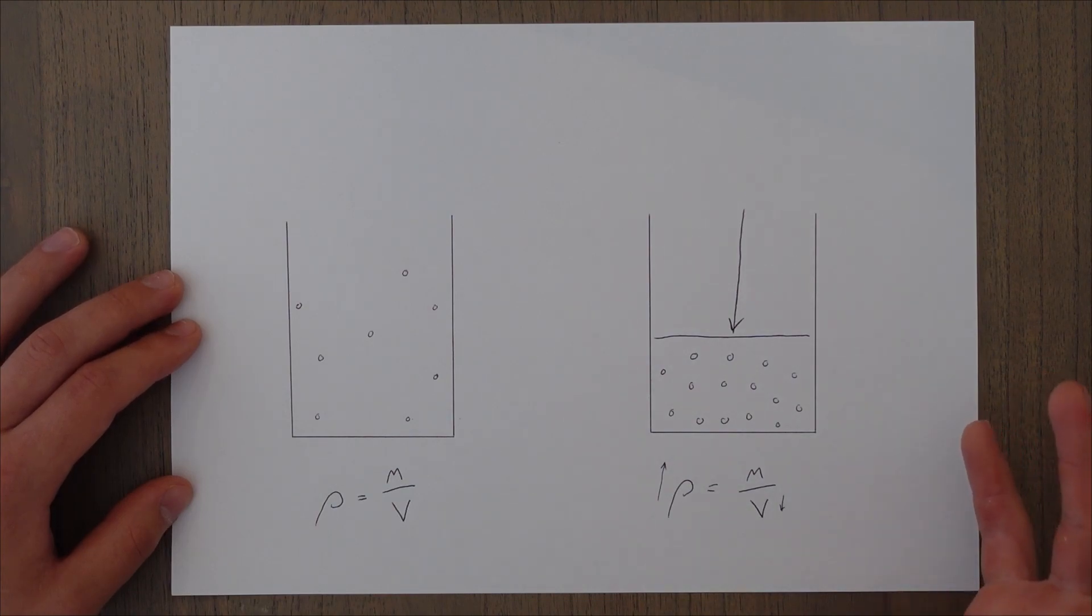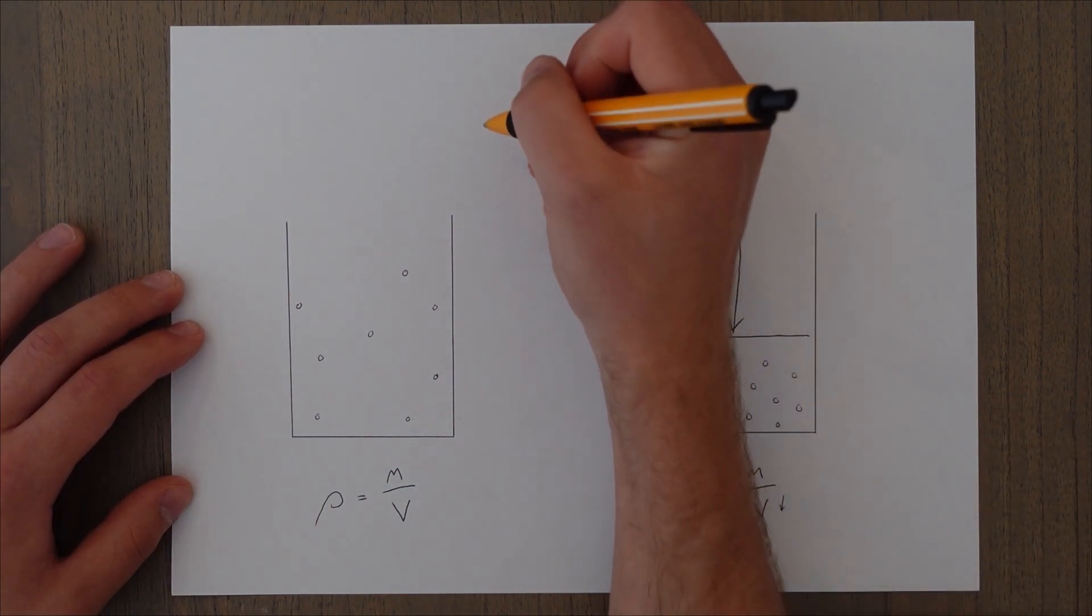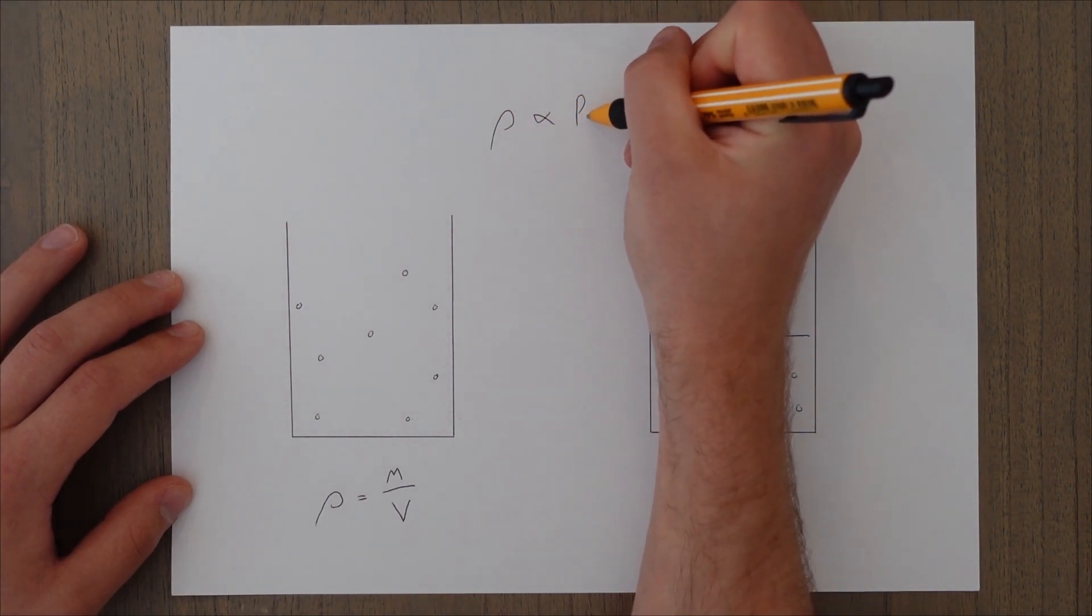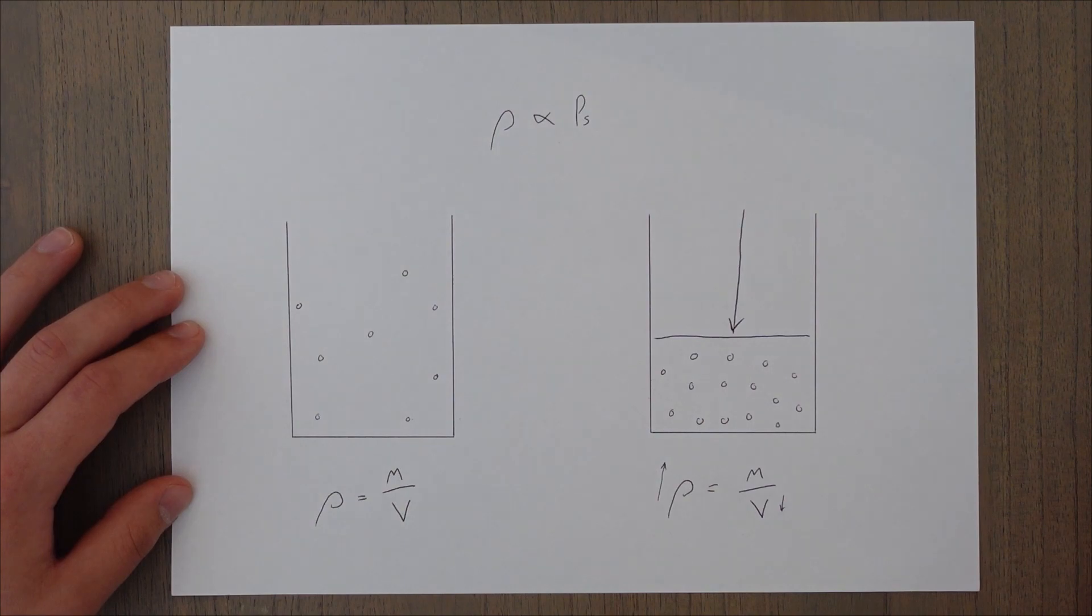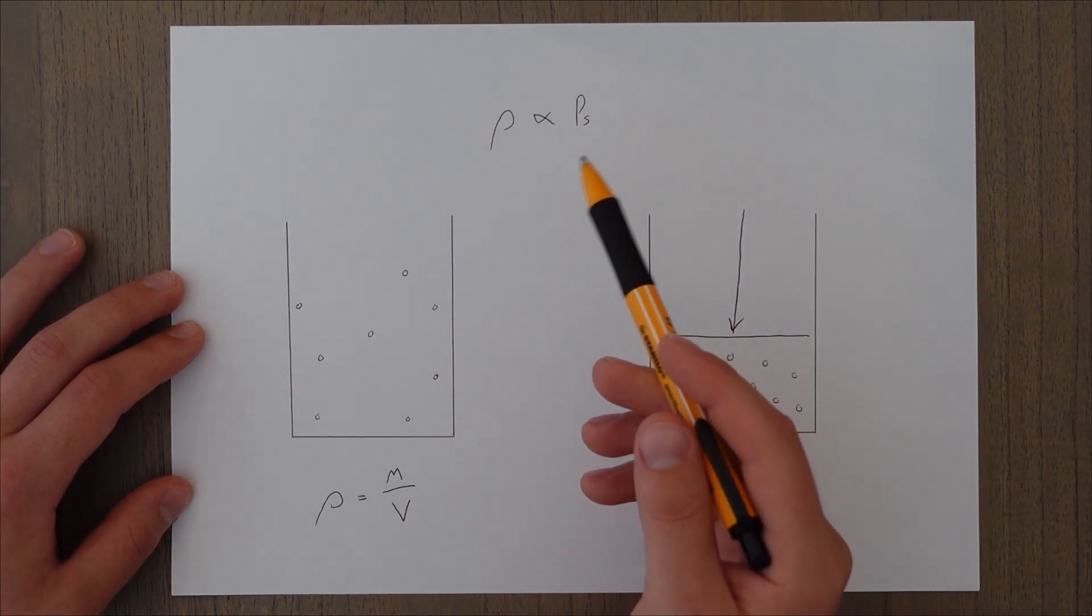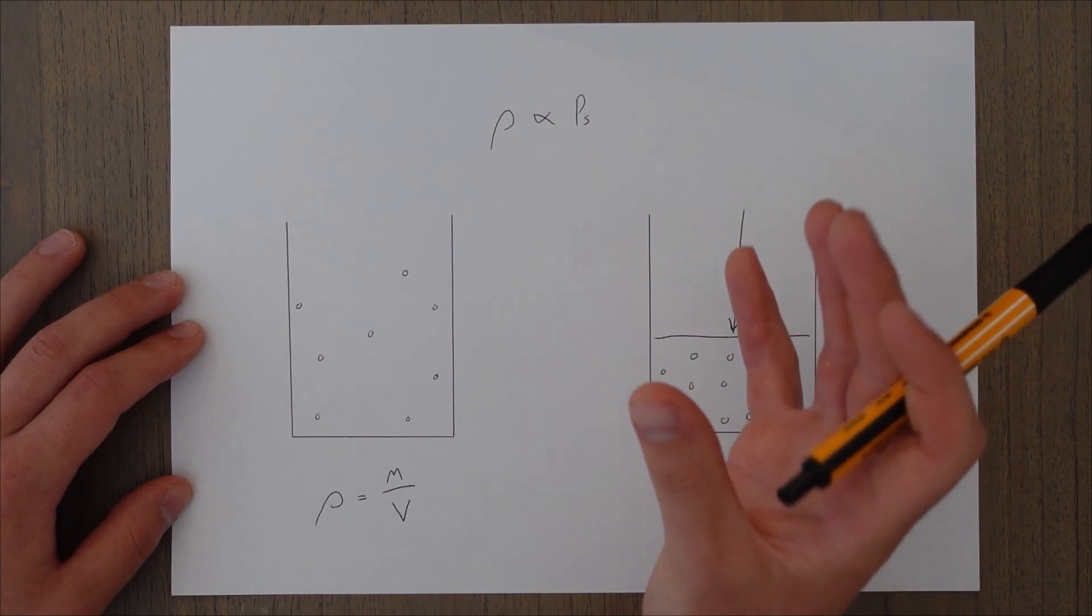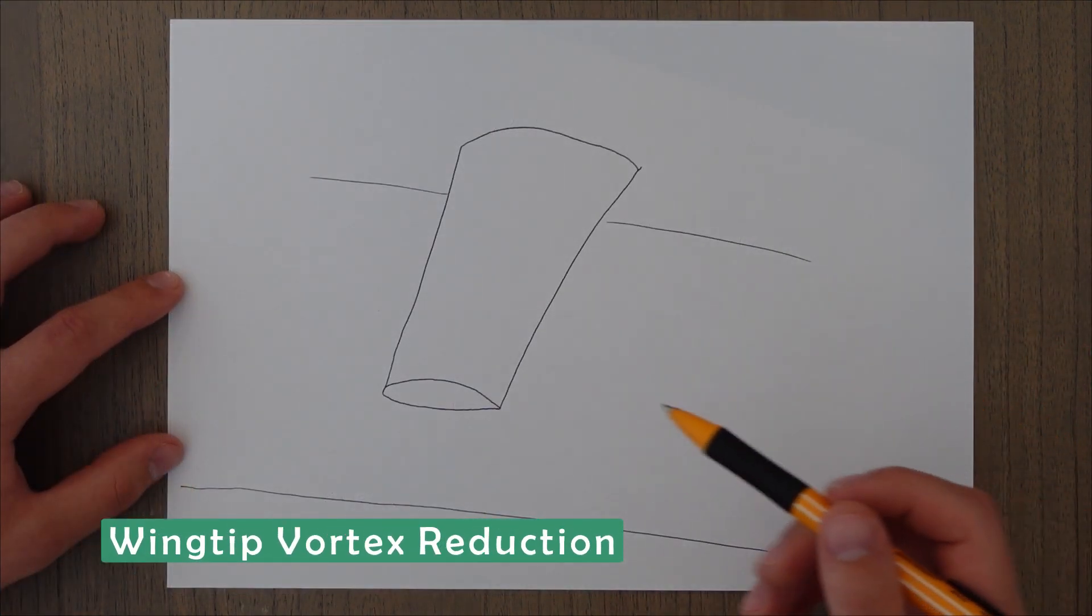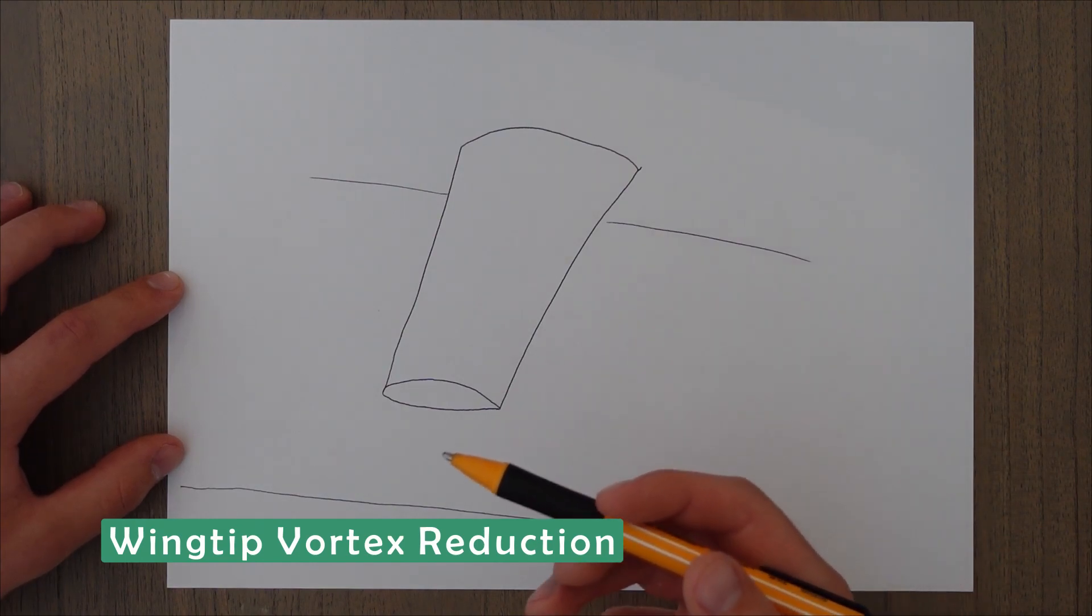And as we learned from our very first class in Principles of Flight, density varies directly with the static pressure. So density goes up, the static pressure goes up, and that static pressure will then push back against the aircraft.